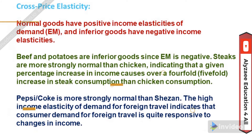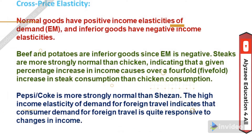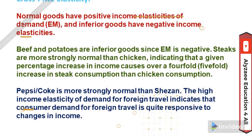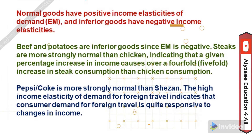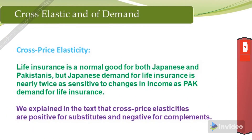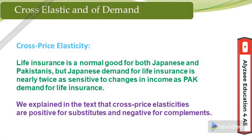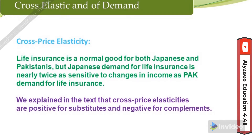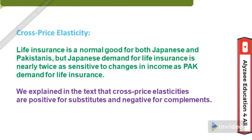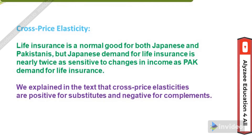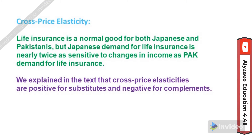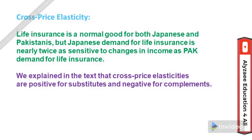The high income elasticity of demand for foreign travel indicates that customer demand for foreign travel is quite responsive to changes in income. As another example, life insurance is a normal good for both Japanese and Pakistanis, but in Japan, demand for life insurance is nearly twice as sensitive to changes in income as Pakistani demand for life insurance. This reiterates that cross price elasticities are positive for substitutes and negative for complements.